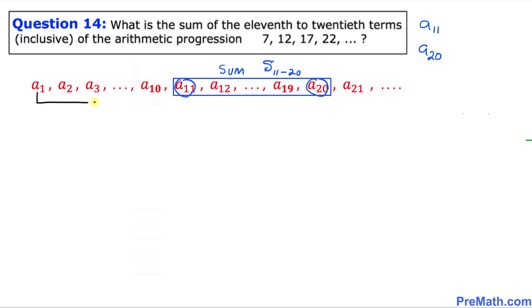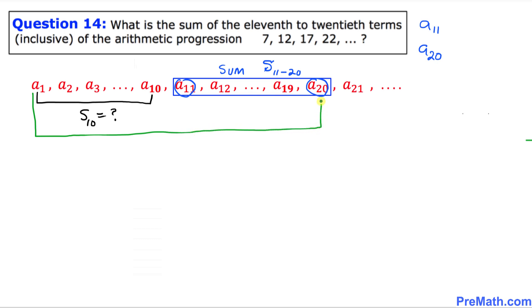First, we find the sum of the first 10 terms, S(10). Then we find the sum of the first 20 terms, S(20). Once we have both, we subtract S(20) minus S(10) to get our answer. Let's go ahead and get started.